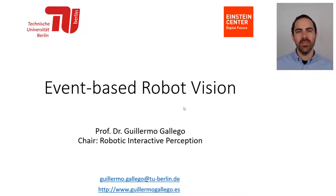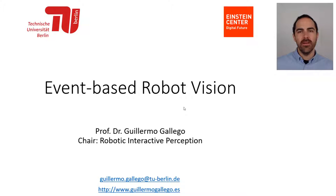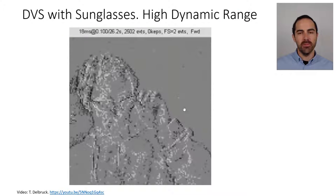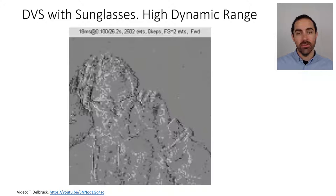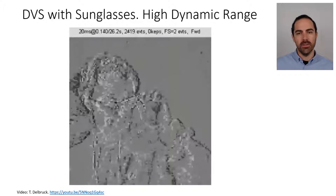Hello, my name is Guillermo Gallego and in this video I will talk about the high dynamic range capabilities of event-based sensors such as the dynamic vision sensor using examples. So let's review some of them. This is perhaps one of the earliest videos trying to convey the message that event cameras such as the dynamic vision sensor have a high dynamic range.